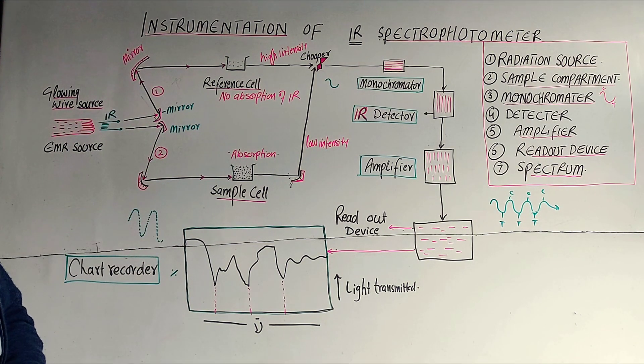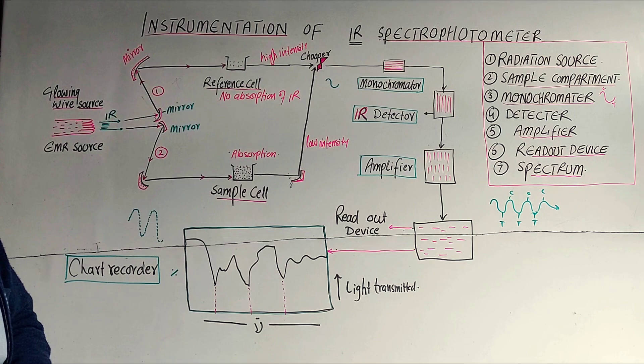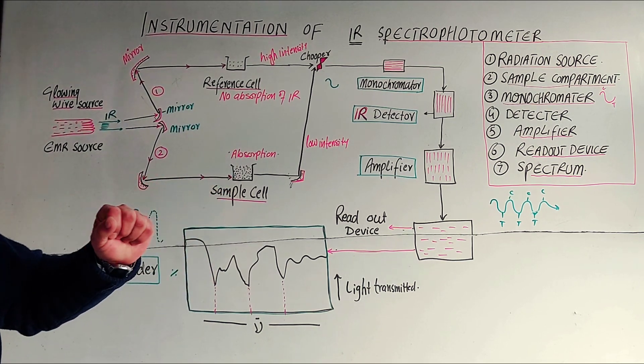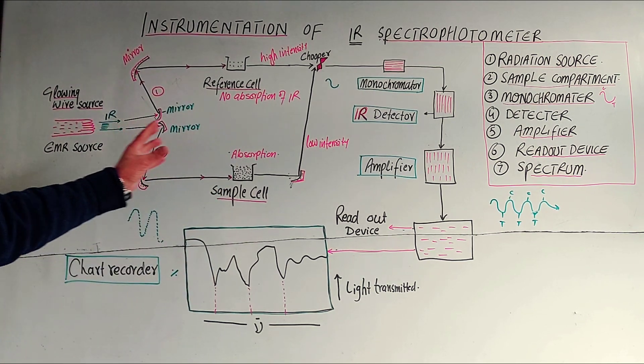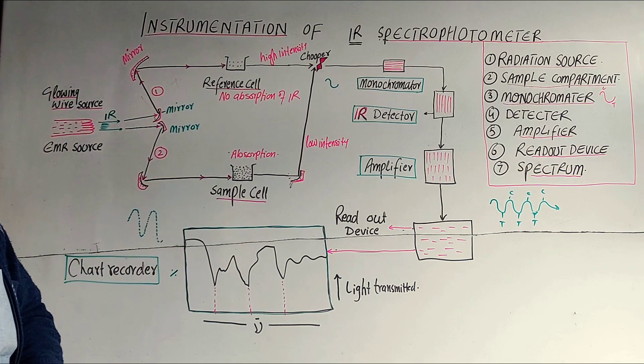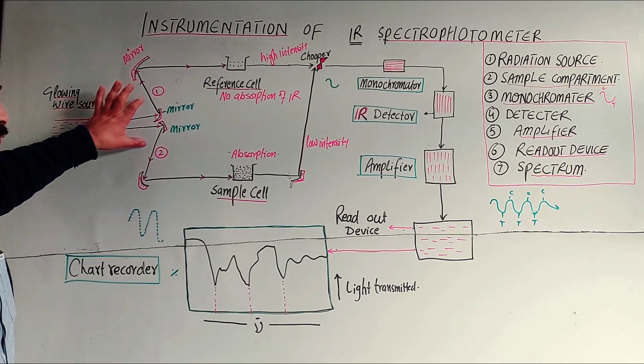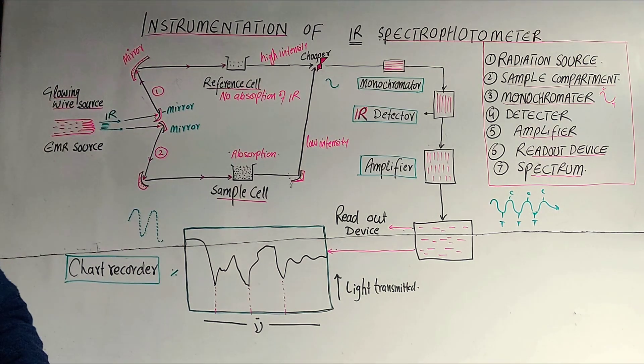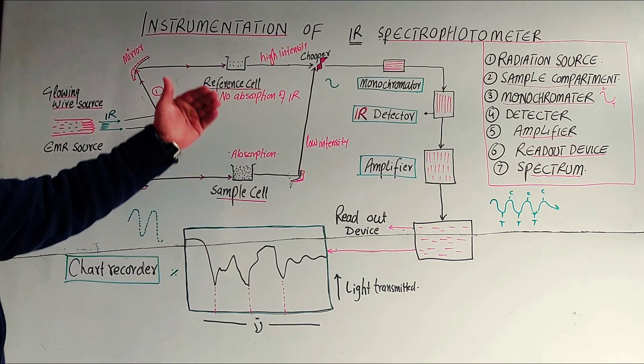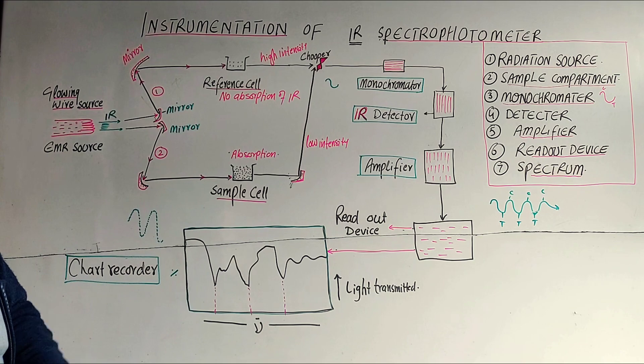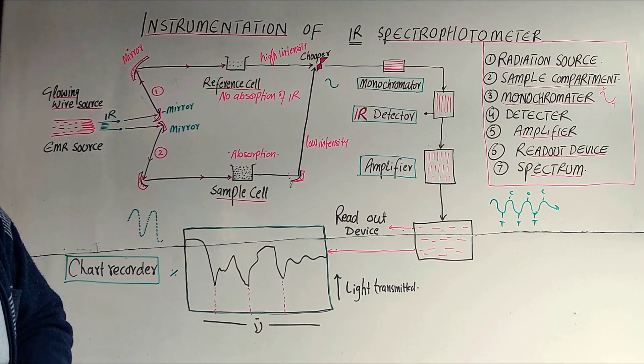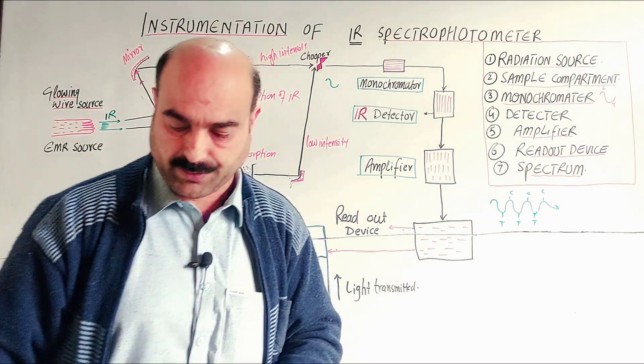So students, these were all about the instrumentation of IR spectrophotometer. In books there is detailed information, but here I have simply explained the instrumentation - this is a simple single beam IR spectrophotometer. There's also double beam where two beams are used. This is how the IR machine works, using IR radiation. Thanks a lot for watching the video.